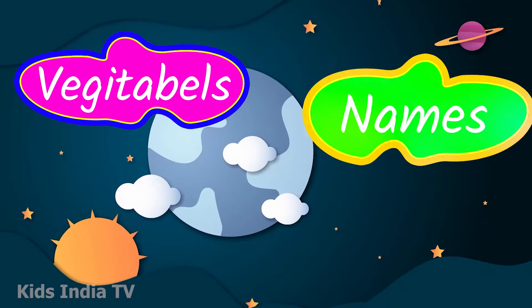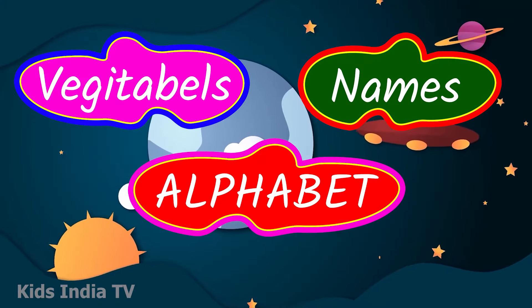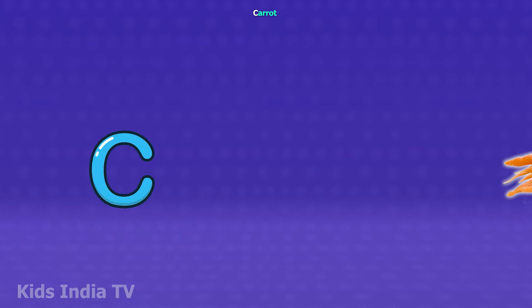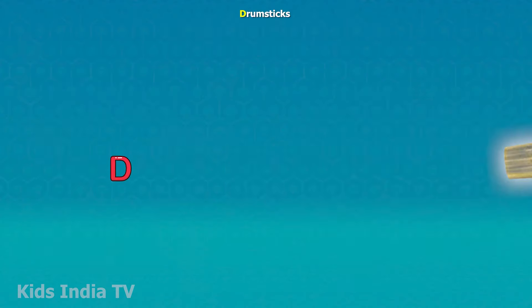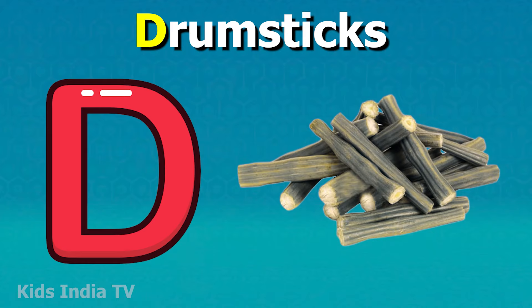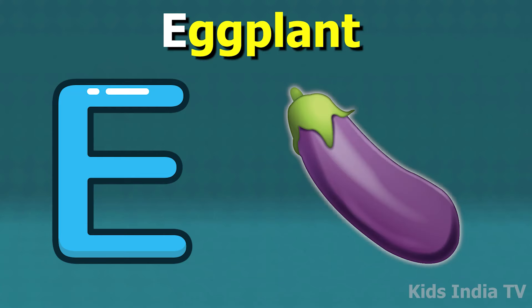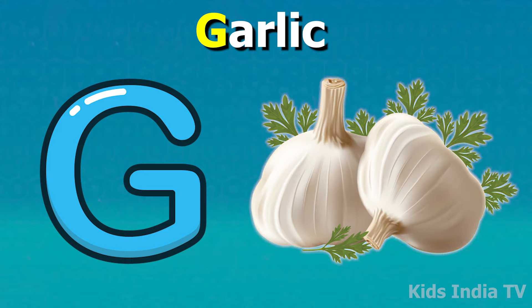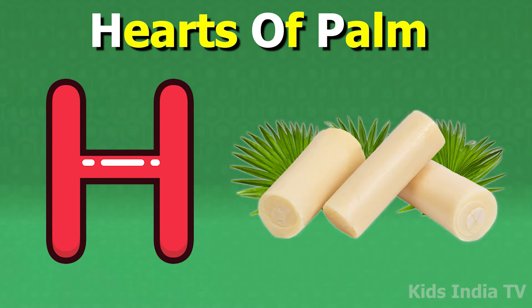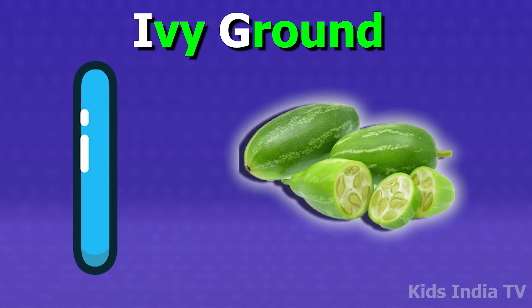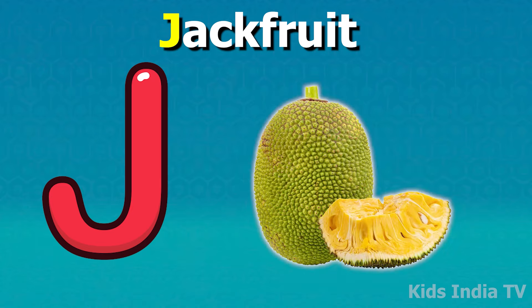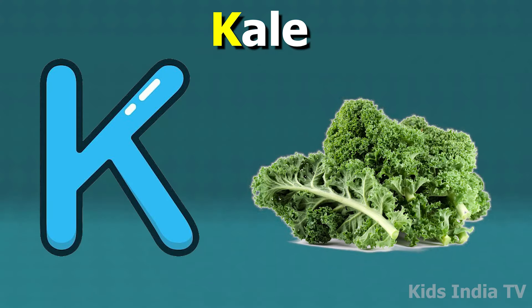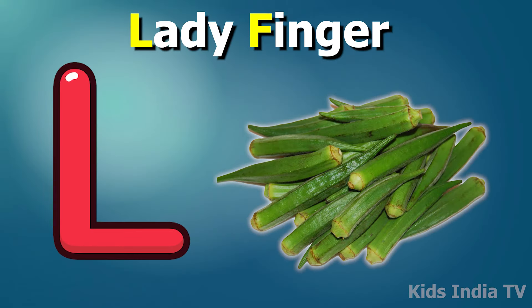Vegetable names according to alphabets. A for ash gourd, B for broccoli, C for carrot, D for drumstick, E for eggplant, F for fenugreek, G for garlic, H for heart of palm, I for ivy gourd, J for jackfruit, K for kale, L for ladyfinger.